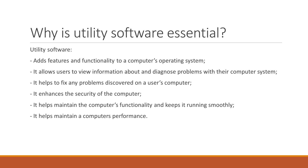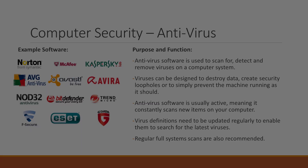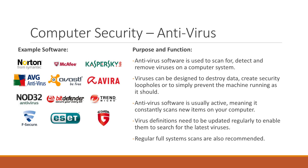You will need to know a range of different types of utility software for your exam, so let's start having a look at some now. The first category of utility software we will examine is computer security, and our first piece of utility software is the antivirus.